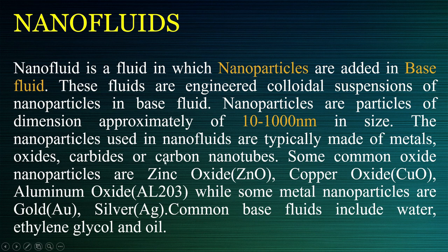The nanoparticles used in nanofluids are typically made up of metals, oxides, carbides, or carbon nanotubes. Common examples of oxide nanoparticles are zinc oxide (ZnO), copper oxide (CuO), and aluminum oxide (Al2O3). Metal nanoparticles include gold, silver, and copper. Common base fluids include water, ethylene glycol, and oil.